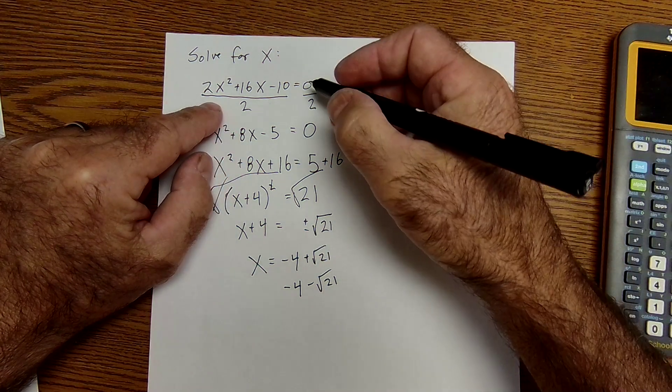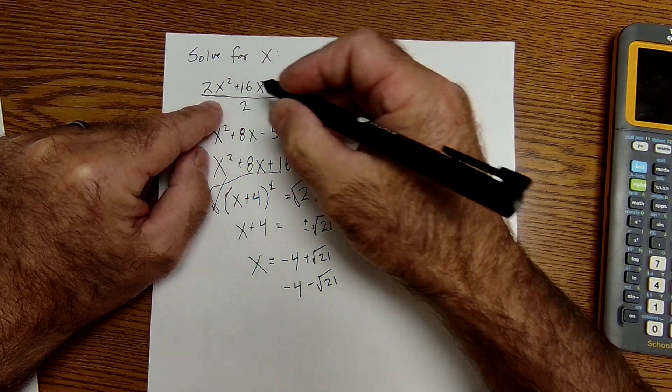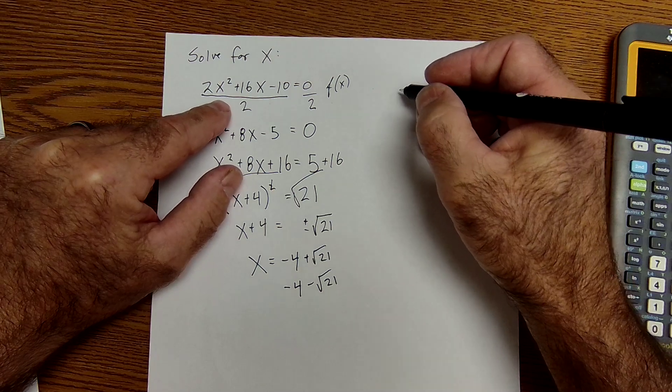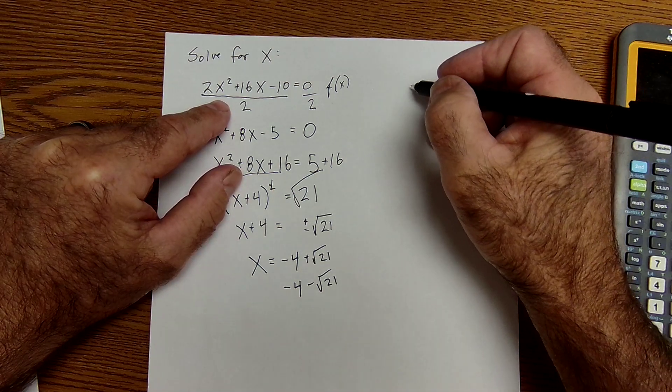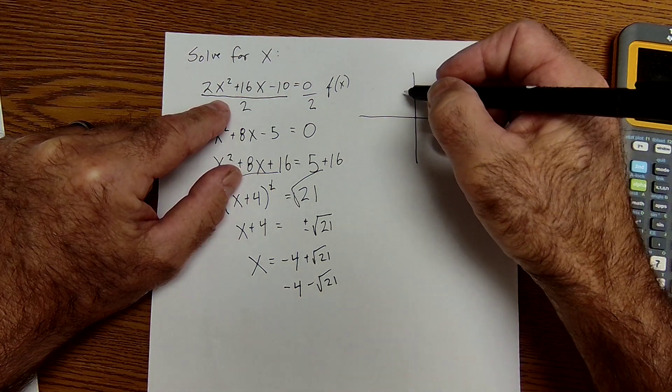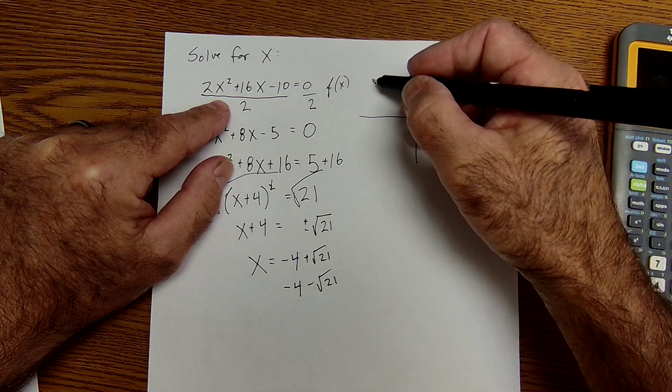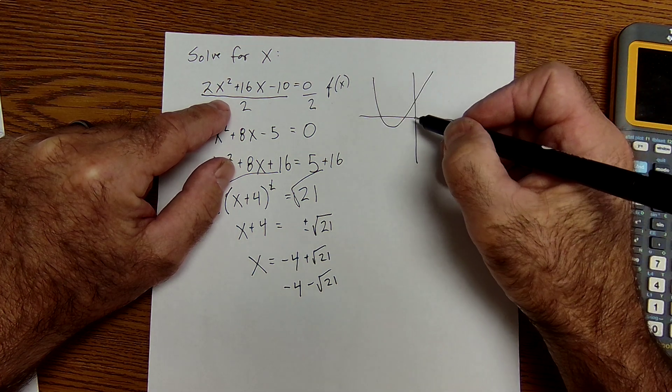If this were a function, F of X equals 2X squared, that would be a quadratic in the form Y equals X squared, where it would cross the X axis.